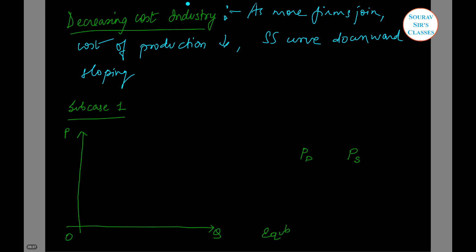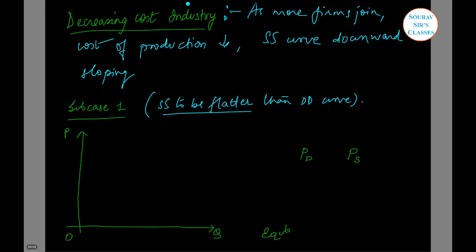In sub-case A, we will make the supply curve flatter — it has a lesser slope than the demand curve. So we have a flat supply curve and a steep demand curve, but both are downward sloping. Let us draw the equilibrium for this case.